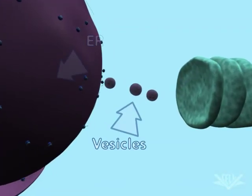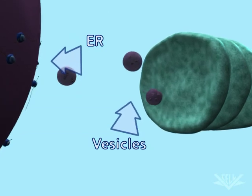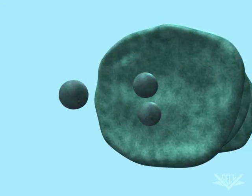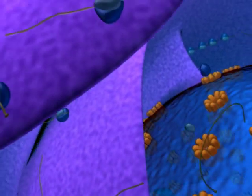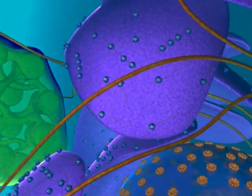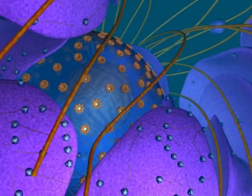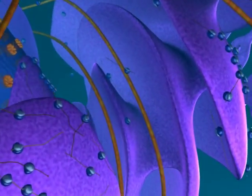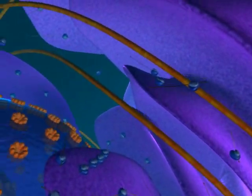Most of this trafficking involves the endoplasmic reticulum, or ER, and the Golgi apparatus. We are now looking at the ER, or endoplasmic reticulum. Some of the cell's ribosomes are attached to the ER, and the proteins they manufacture are inserted directly into the space inside the ER.